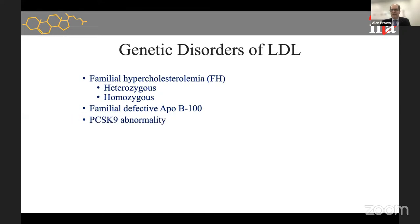Heterozygous familial hypercholesterolemia occurs in one in 250 people, while homozygous occurs in about one in 250,000 to one in a million individuals. A similar sister disorder is familial defective ApoB — a mutation in the gene for ApoB rather than the LDL receptor. A very rare but much talked-about disorder is a gain-of-function mutation in the gene for PCSK9. These patients have overproduction or overpotency of their native PCSK9 protein, which destroys LDL receptors, causing very high LDL.